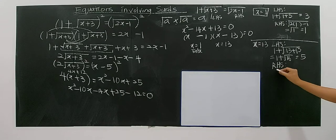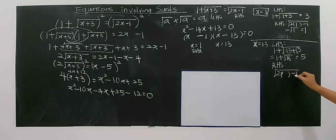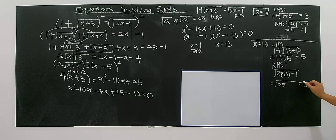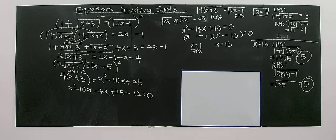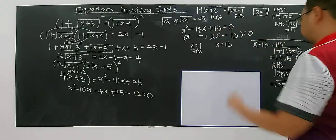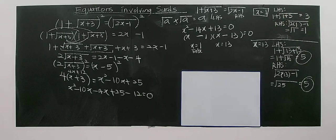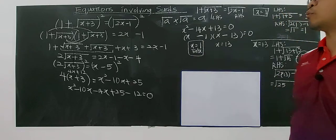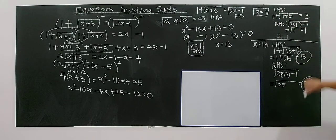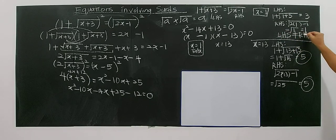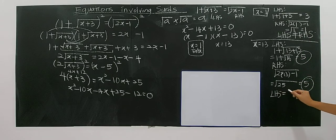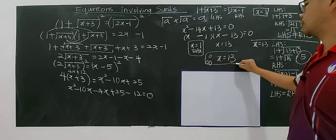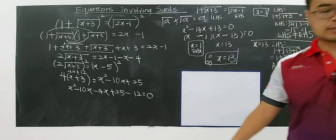Right hand side: square root of 2x minus 1. Substitute x equals 13: square root of 26 minus 1 equals square root of 25 equals 5. Left hand side is 5 and right hand side is also 5 — they are equal! So x equals to 13 satisfies the equation. Therefore you reject x equals to 1 as a false solution, and the real solution is x equals to 13.